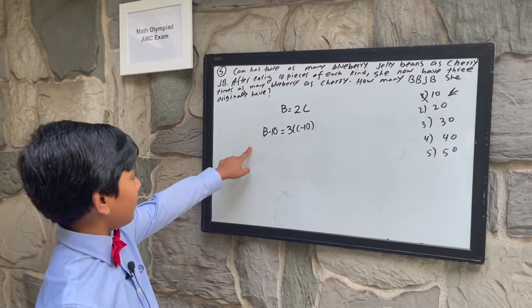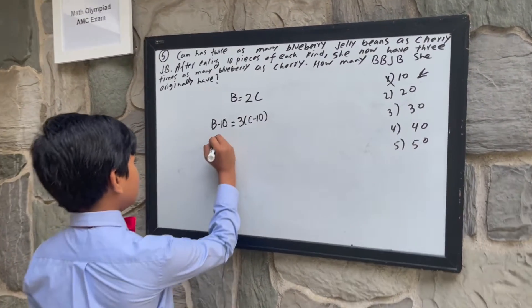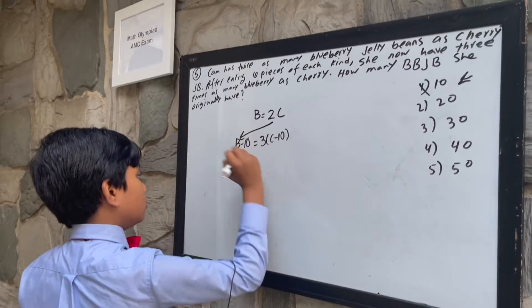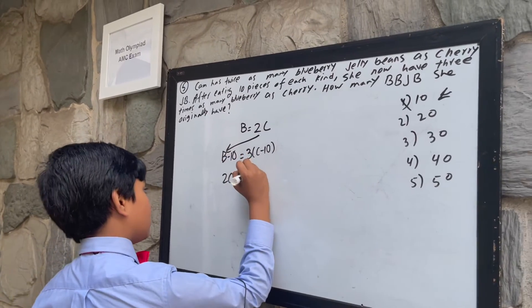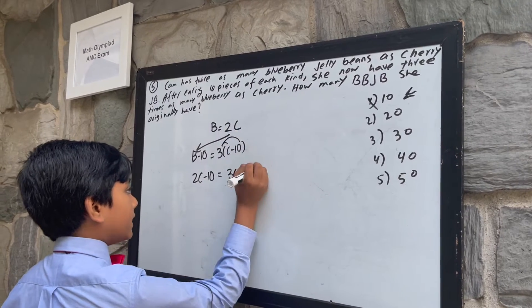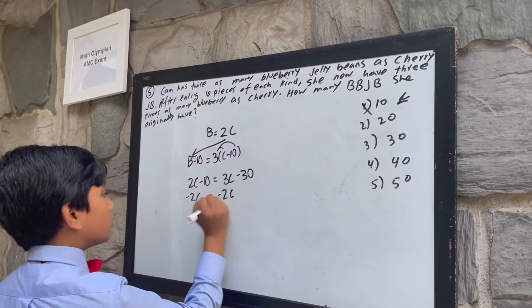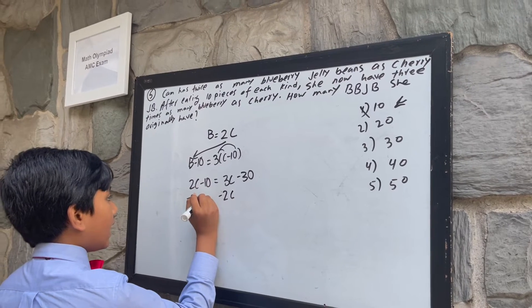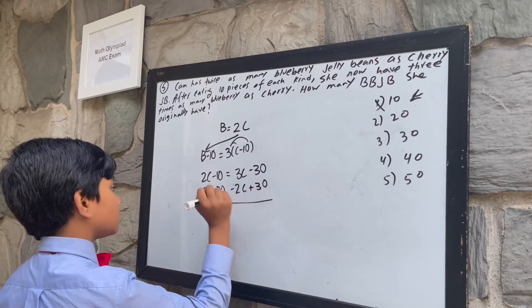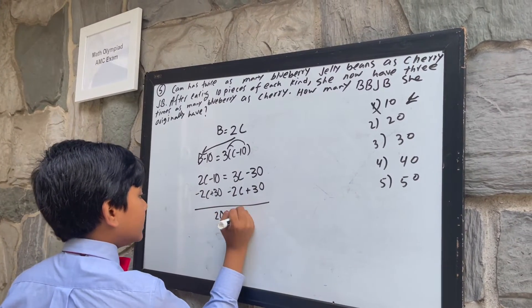C minus 10, B minus 10, and times 3. So now we just set B equals 2C from this equation, and we distribute here, giving us 3C minus 30. Now we subtract 2C from both sides, and then we add 30 to both sides, and we get 20 is equal to C.